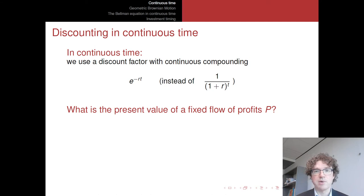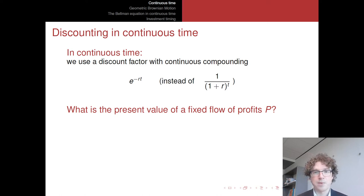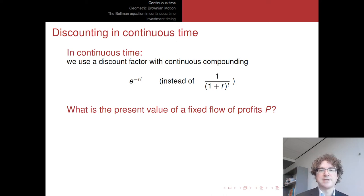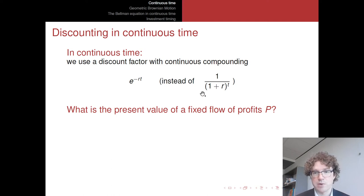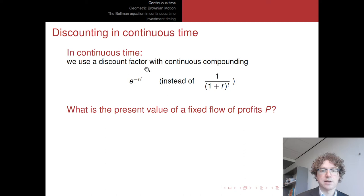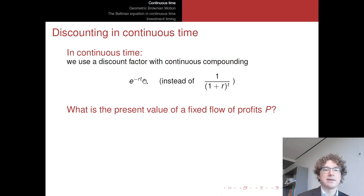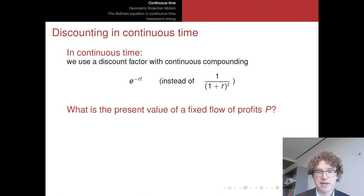In order to go to continuous time, we also have to look at discounting in continuous time. We'll use a discount factor with continuous compounding. Instead of using a discount factor with annual compounding, we go to continuous discounting, which takes this particular form — essentially a choice to make life more convenient in continuous time. This is a number slightly lower than 1 but above 0, so it's like a discount factor. R is the interest rate with continuous compounding, and T is time.